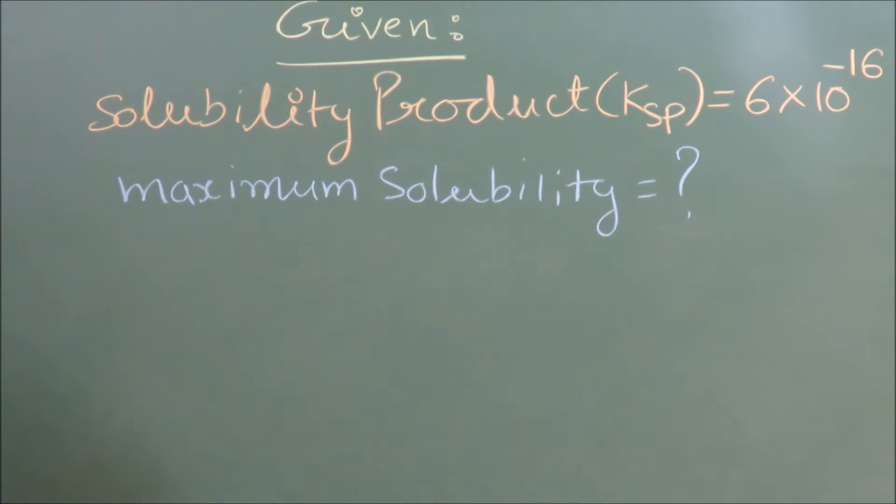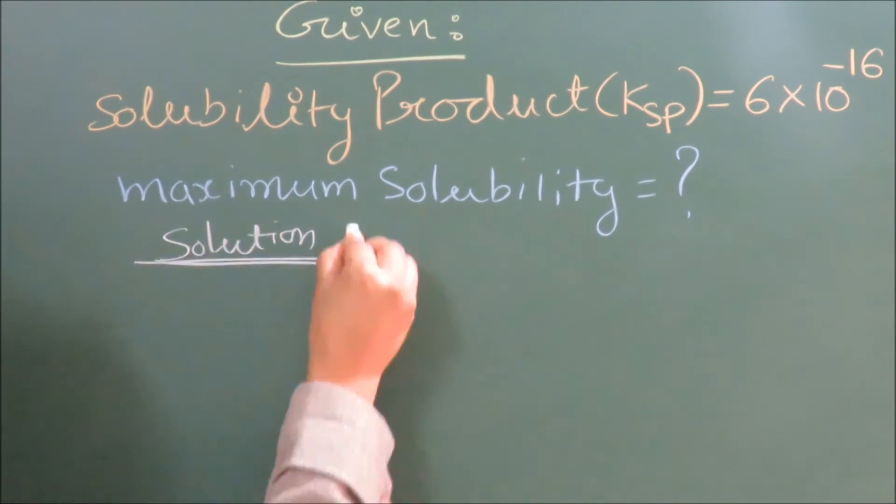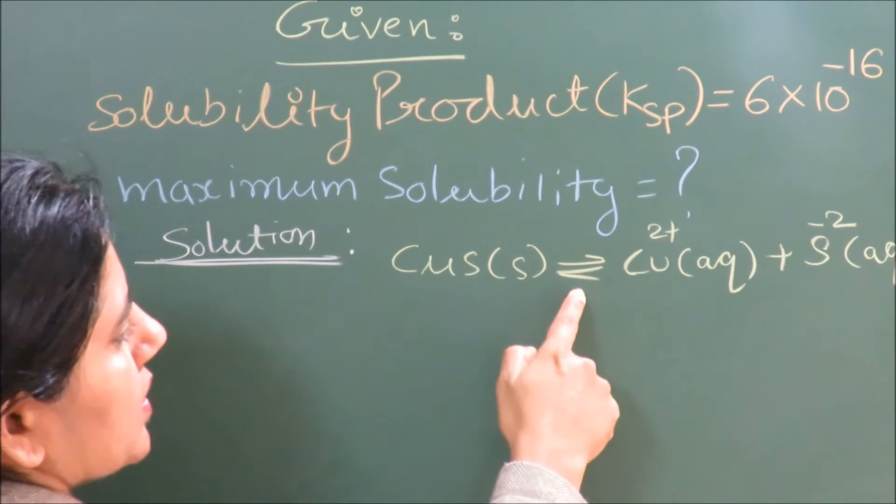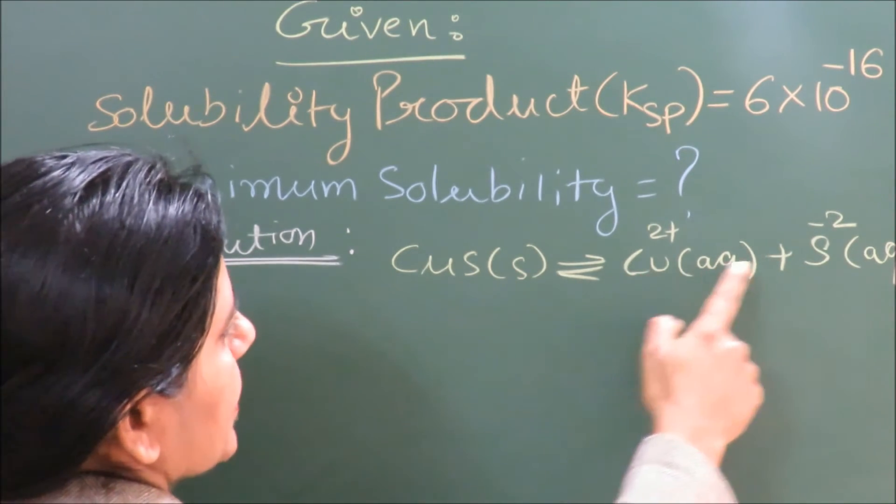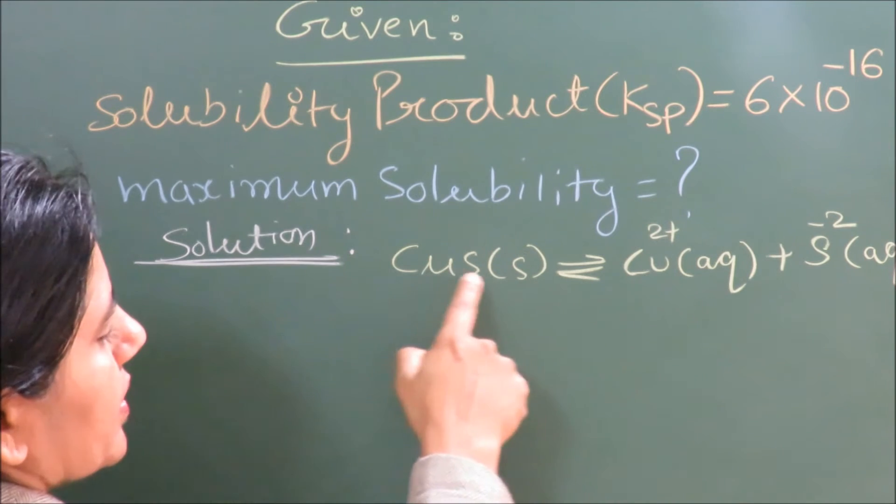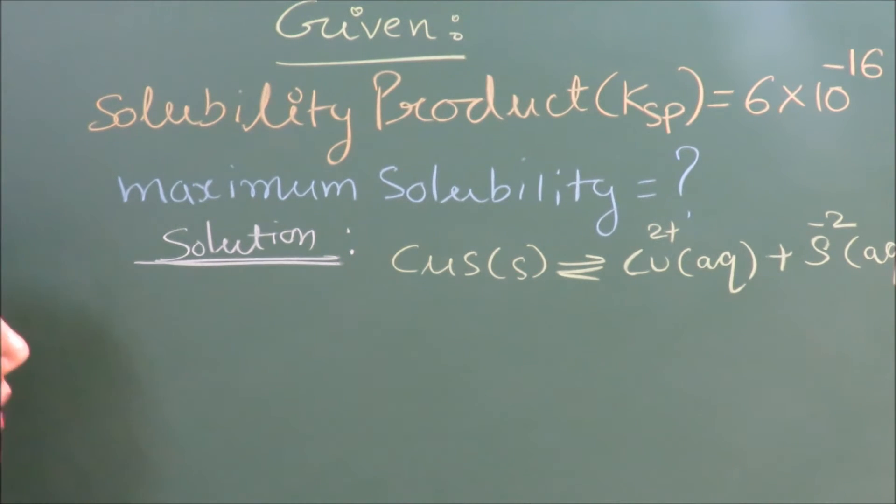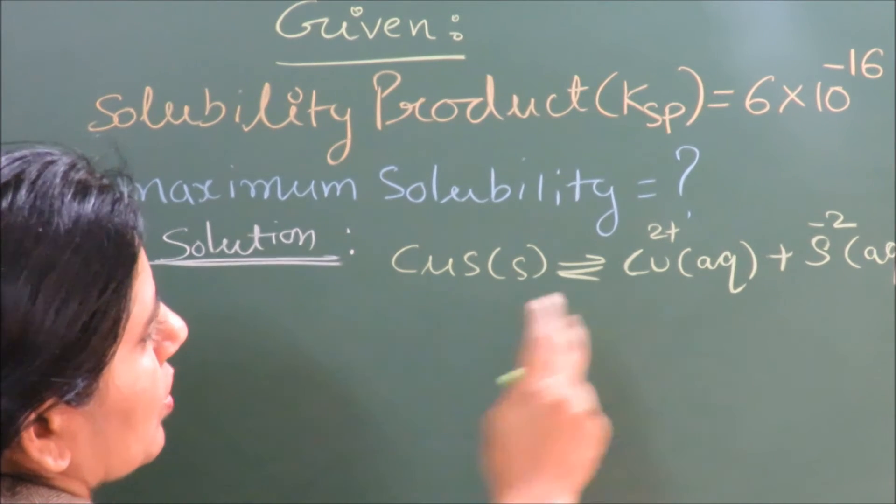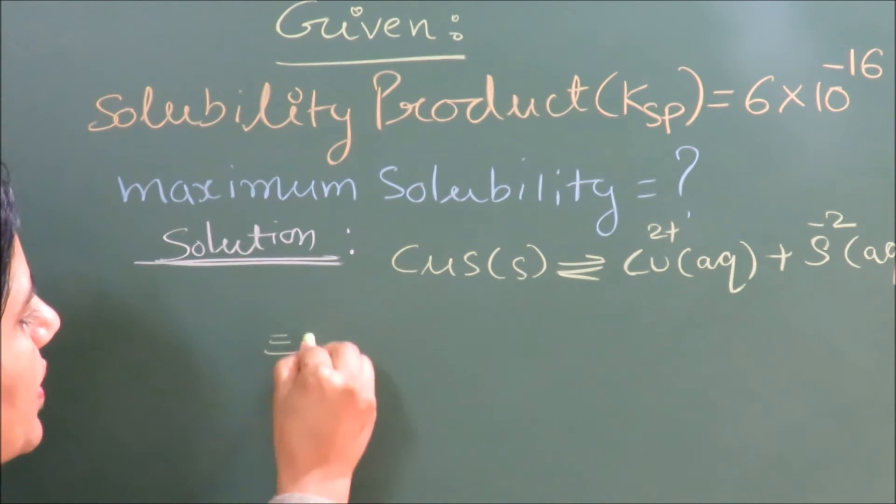We are writing the expression for CuS existing in equilibrium with Cu²⁺ ion and S²⁻ ion. CuS exists as a solid. There is equilibrium between the undissociated solid and the dissolved part. At the stage of equilibrium, we will assume that the maximum part of CuS dissolved is S molar.